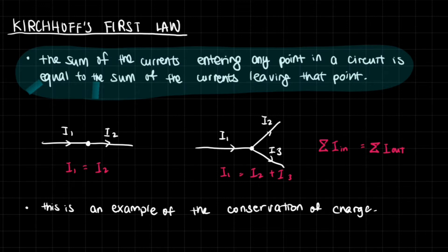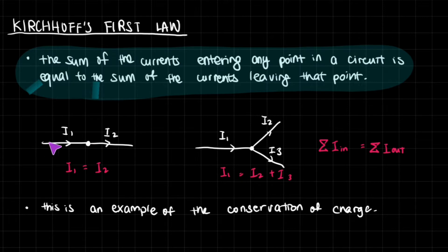We have two Kirchhoff's laws that we need to know, and the first one is very simple. It basically just tells us that the sum of the currents entering any point in a circuit is equal to the sum of the currents leaving that point. So if you have a certain current going into a point, then every single charge that went in there is going to come out exactly the same.